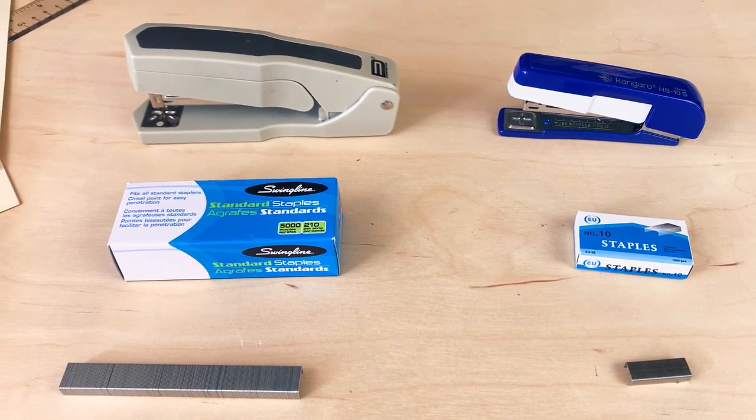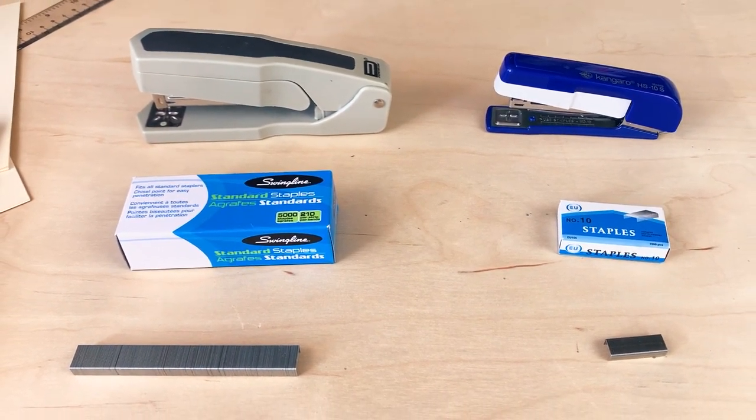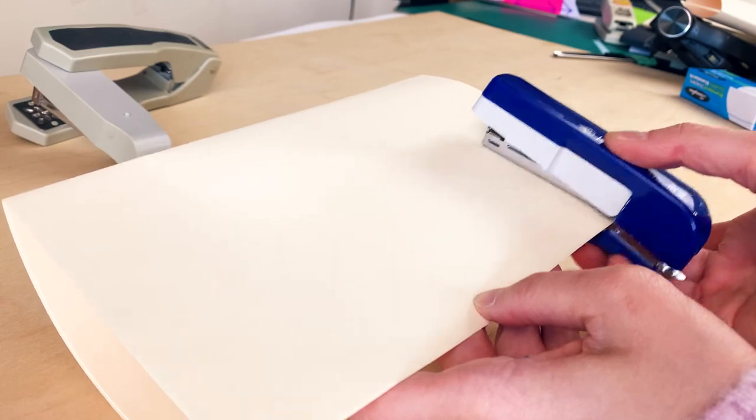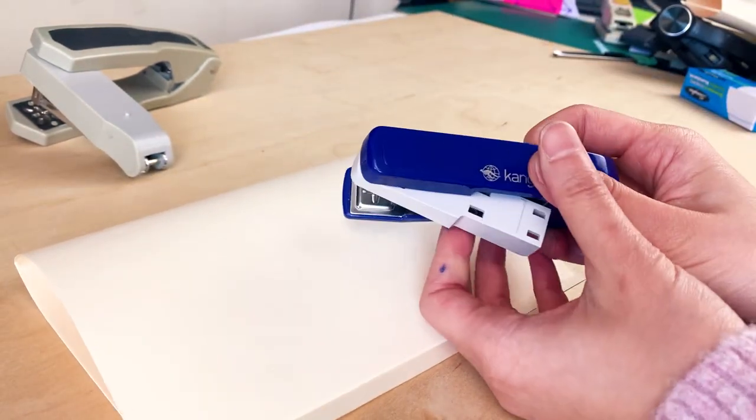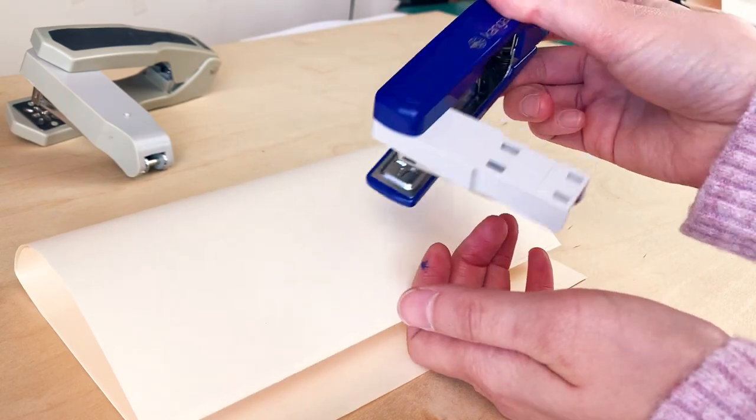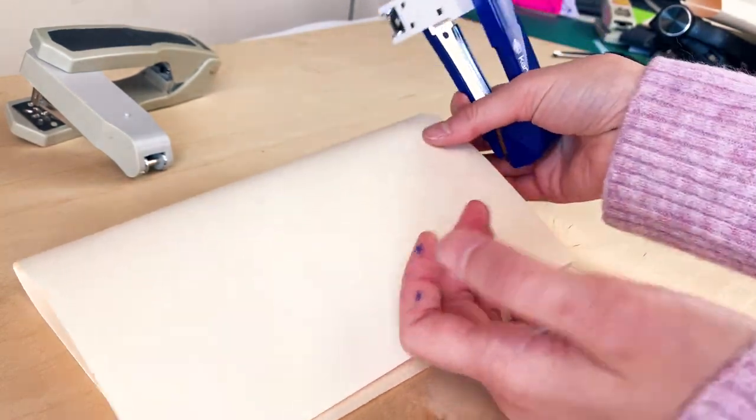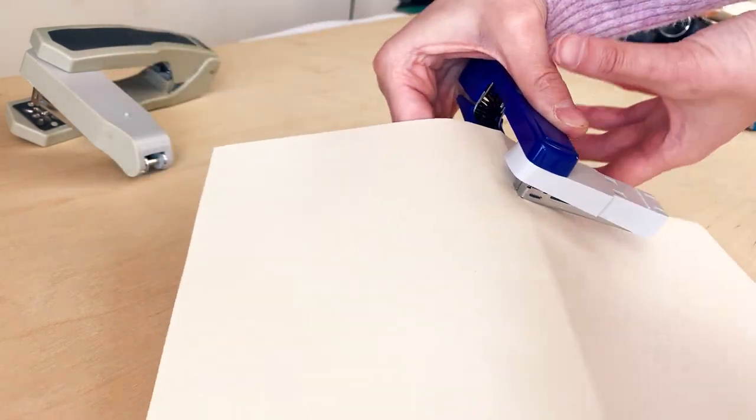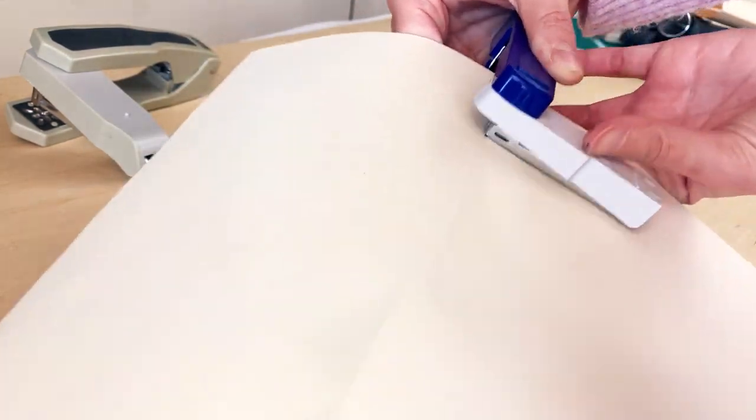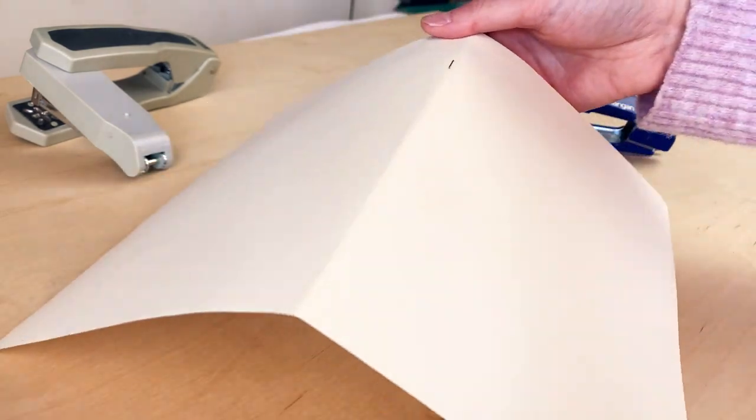The number 10 size stapler is smaller than the standard stapler. And it's more commonly found in Asia and countries like the Philippines, Japan, Taiwan. You can find both number size 10 staplers and standard staplers in Asia. But in North America, the number 10 sized staplers are less common. You can still find them, but they're not standard issue.